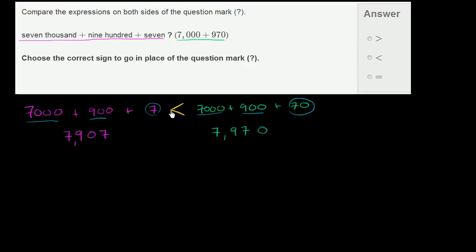I always remember the less than symbol because it points to the smaller number, or either of these symbols point to the smaller number. So this right over here would mean greater than. You have the larger number on the left. This is less than. You have the smaller number on the left. So we would go with less than. This is less than that.